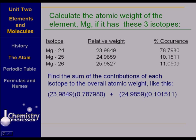Add to that the 24.9859 from the second isotope times its percent occurrence done in decimal form, of course, 0.101511. And add to that the third one, which is 25.9827 times its decimal form of the percent, 0.110509. Take those products, add them up, and you get 24.3073.